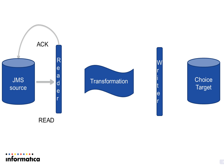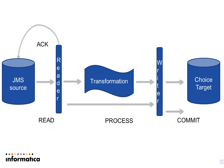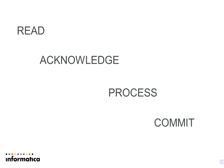The message data is available in the pipeline for consumption and goes through the transformation logic, and is pushed onto the writer thread to be loaded to the desired target. The typical sequence of events in the case of no recovery are: read the message, acknowledge, process the message, and commit the message onto the target.